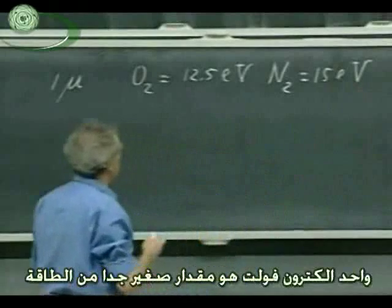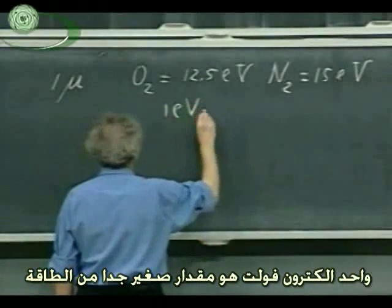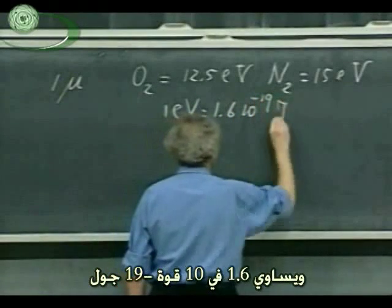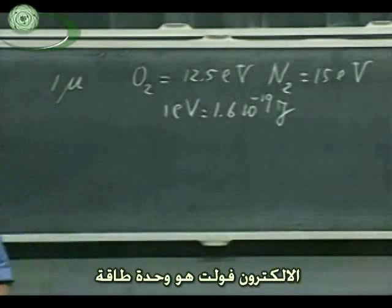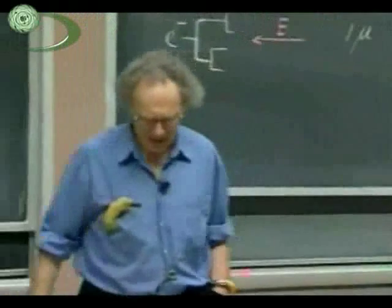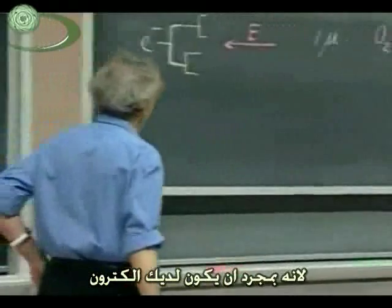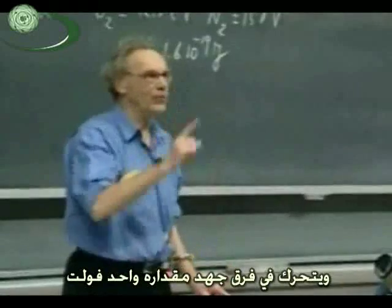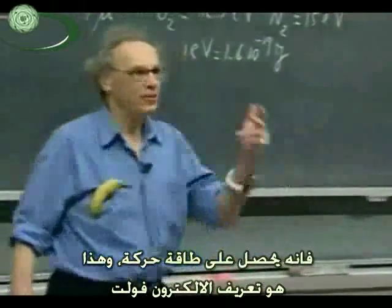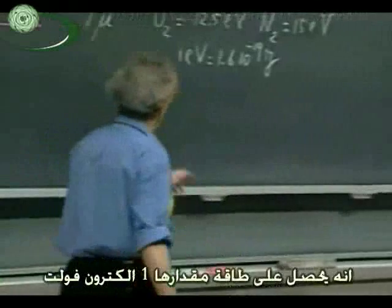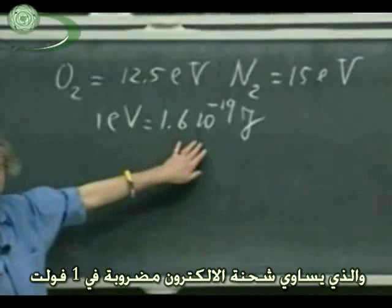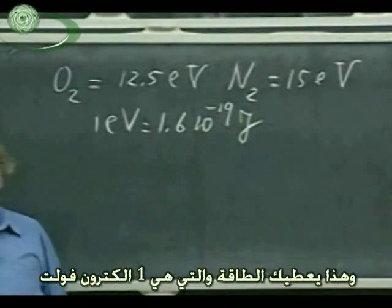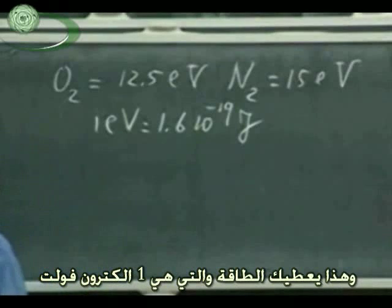What is an electron volt? An electron volt is a very small amount of energy — 1.6 × 10^-19 joules. It's actually a very nice unit of energy: once you have an electron and it moves over a potential difference of one volt, it gains one electron volt of kinetic energy. That's the definition. It's the charge of the electron, 1.6 × 10^-19 coulombs, multiplied by one volt.